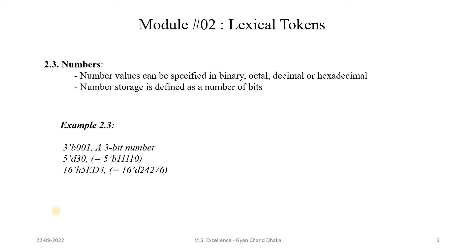Examples could be 3'b001 — this is a binary number — then a decimal number, and then a hexadecimal number. So the third type of token a Verilog HDL file can have is a number.